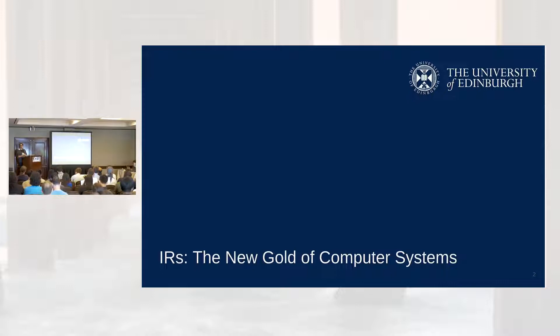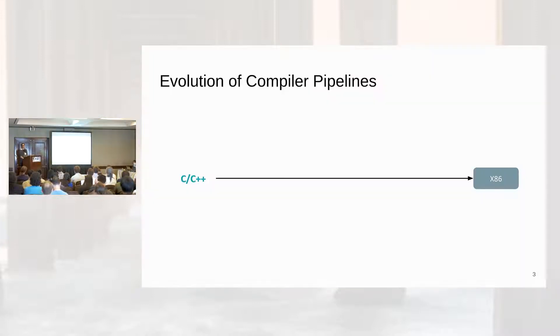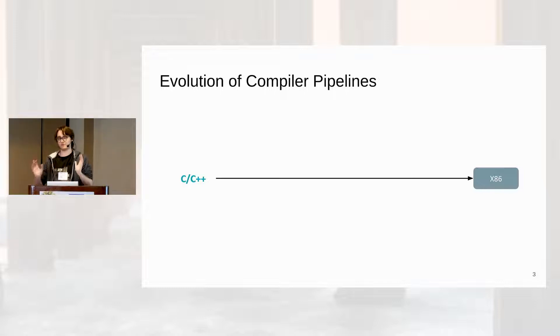So first of all, let's talk a bit about intermediate representations themselves. If you look at old compilers, you start from your input language like C or C++ and you compile it with a black box to x86. This is not that good because you have a huge abstraction gap between your first representation and x86, so it's not really easy to write a compiler for it.